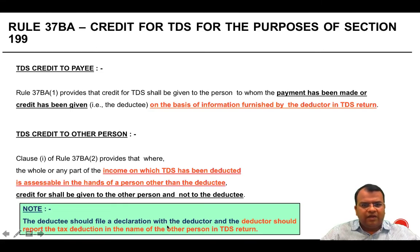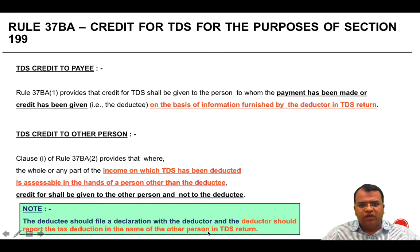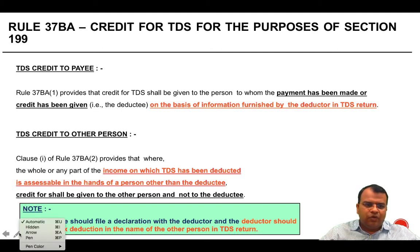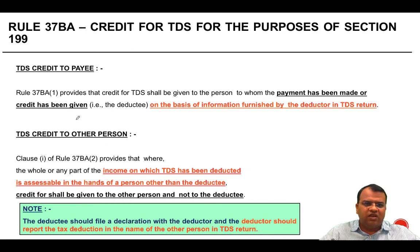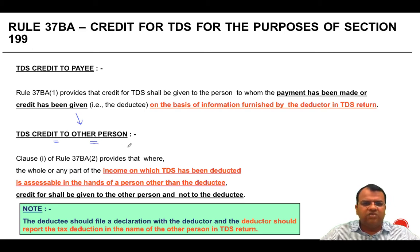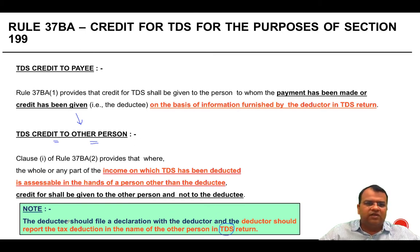The deductee should file a declaration with the deductor, and the deductor should report the tax deduction in the name of the other person in the TDS return. If this reporting is not done — if the deductor has not mentioned in the TDS return that TDS credit has to be given to another person — then that person will not get the credit, because for the income tax department, the only way they can know is through the TDS return.